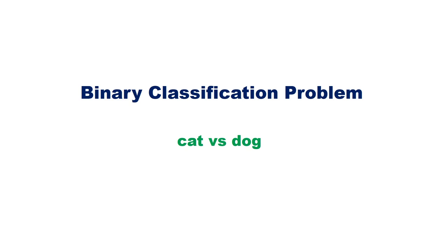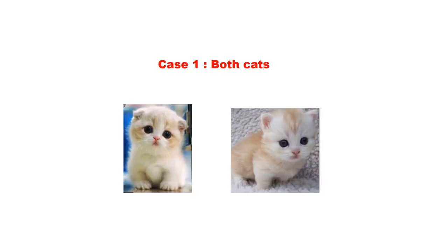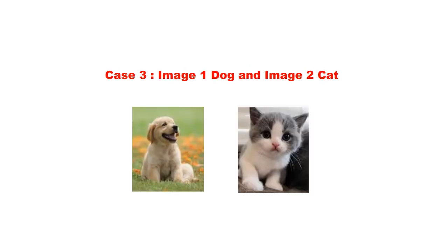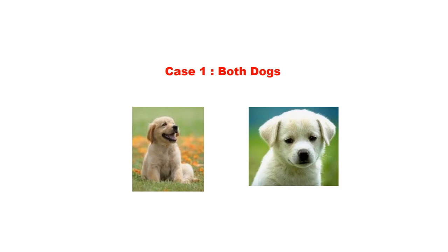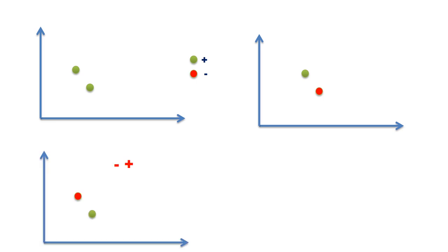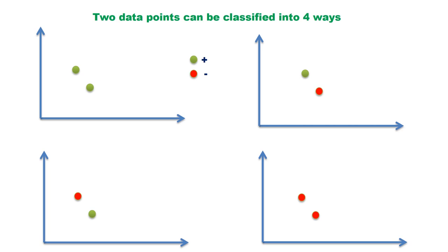Assume that we have only two instances. Two instances can be classified in four different ways. First case: both images are cats. Second case: image one is cat and image two is dog. Third case: first image dog and second image cat. Fourth case: both are dogs. Let us draw a scatter plot using positive class and negative class, where a green dot represents positive class and a red dot represents negative class. The four cases map to: both positive; first positive, second negative; first negative, second positive; both negative.